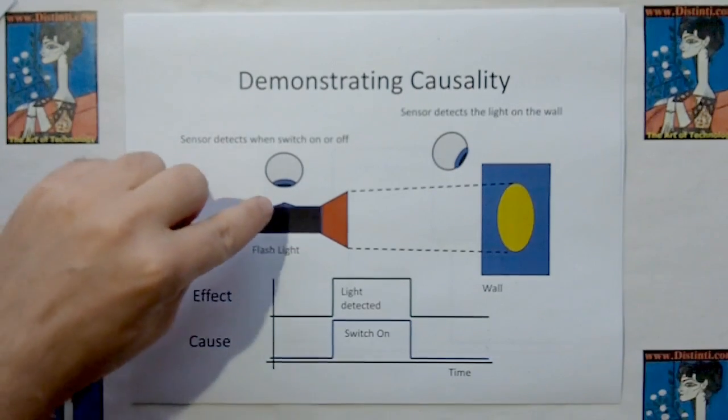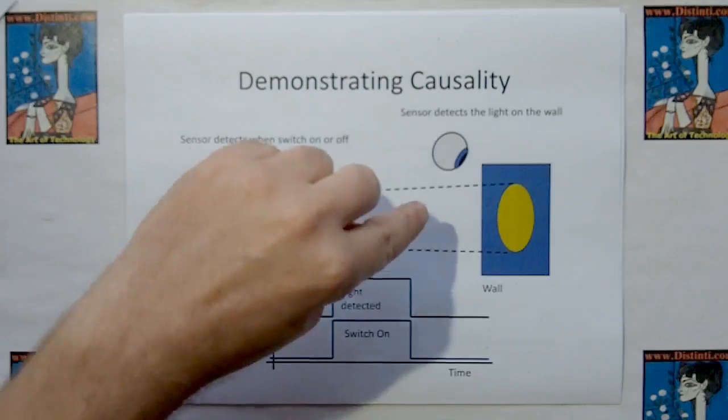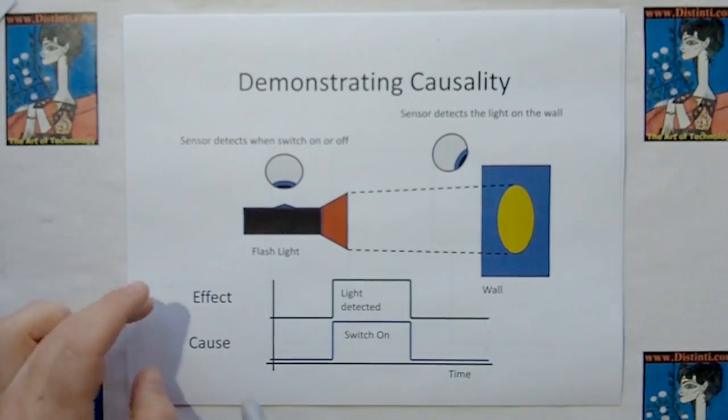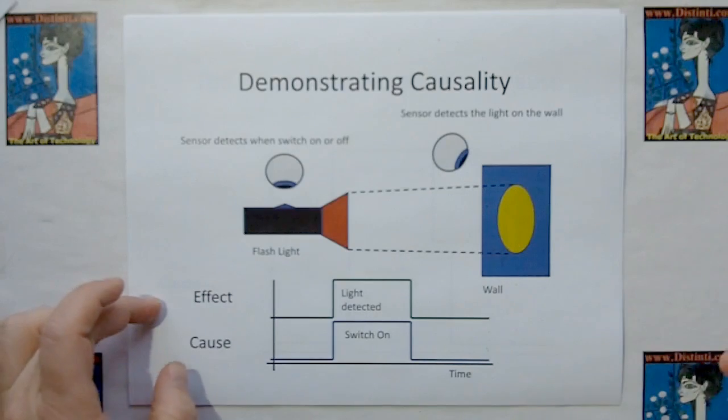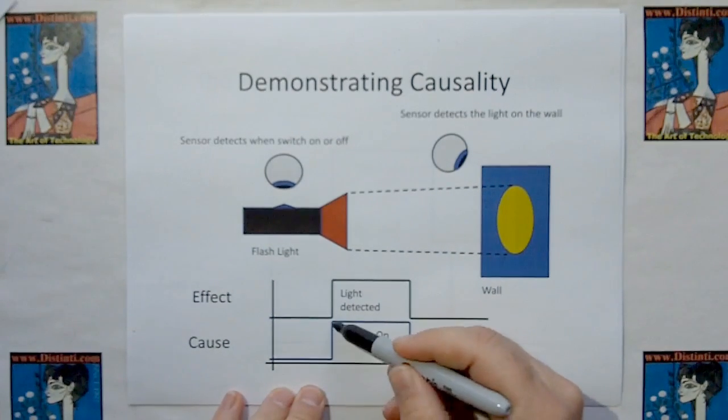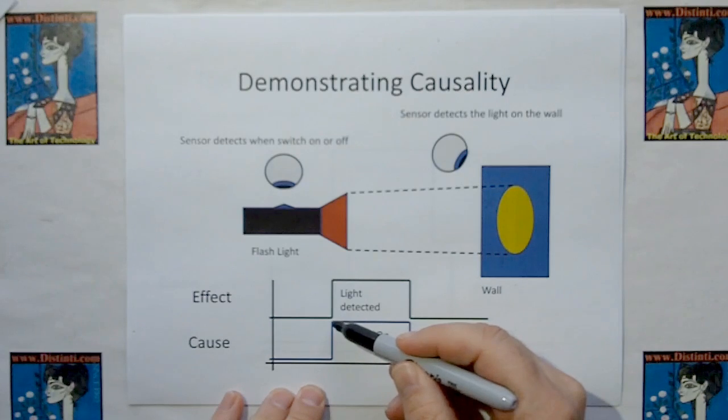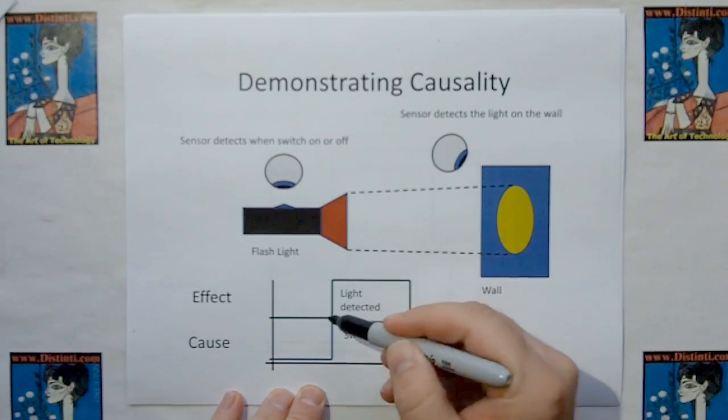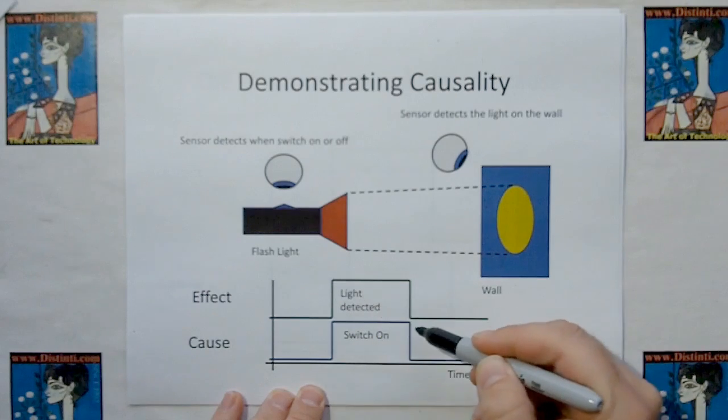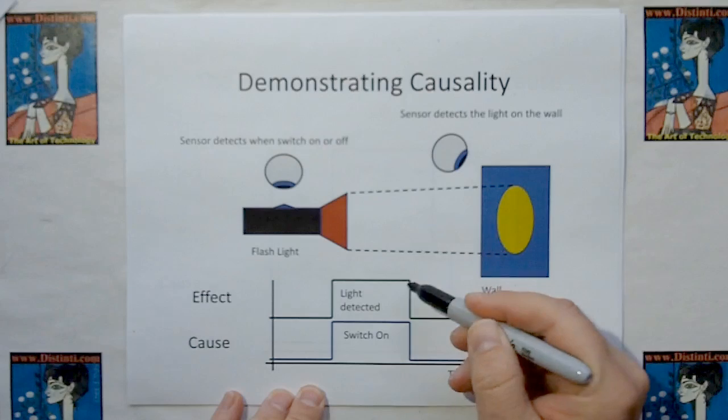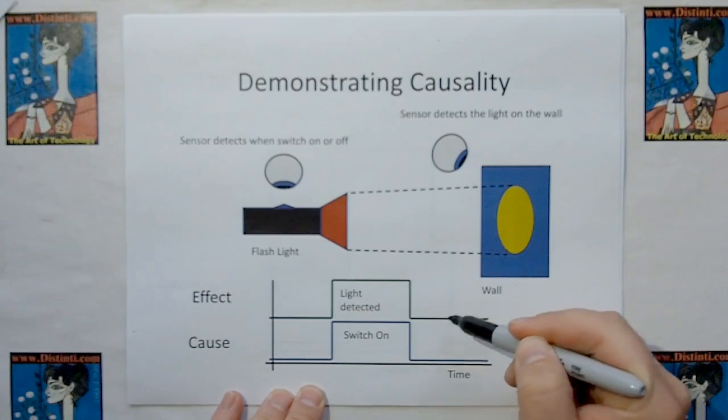Well, if we call the cause turning the switch on and the effect the light appearing on the wall, and the sensors are denoted by little eyeballs, then here, when I show the switch going on, at a very instantaneously short time afterwards, the other sensor is going to see the light on the wall. And then when the switch goes off, at a very short time after that, this sensor is going to detect that the light is going off.